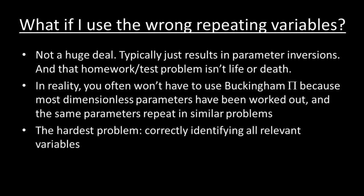As long as you're following the rules I mentioned earlier, an atypical selection of repeating variables usually just gets you products or inversions of the relevant dimensionless parameters. In reality, a lot of dimensionless parameters have already been worked out, and the same parameters tend to repeatedly show up in similar problems. No, the more difficult and important task is correctly identifying the full list of relevant variables in the first place.